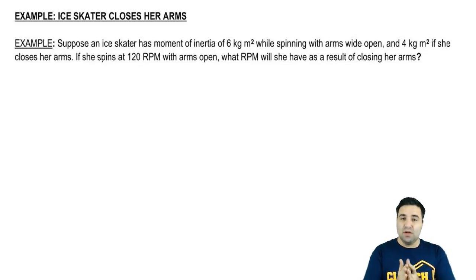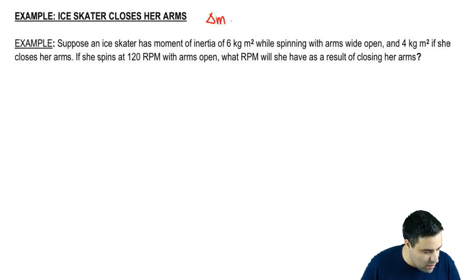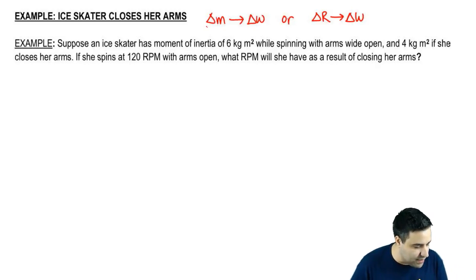Remember conservation of angular momentum is about objects that are spinning that will change either their m and then that will cause a change in omega, or they will change the radius of some sort and that will cause a change in omega.